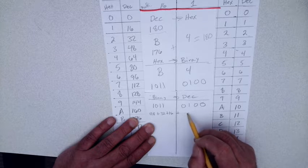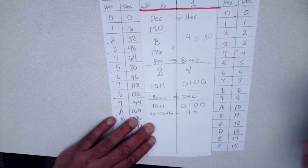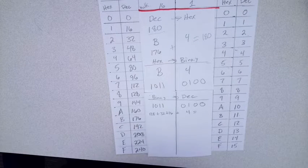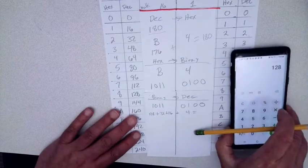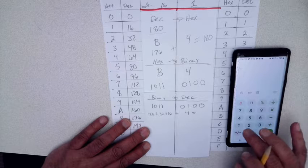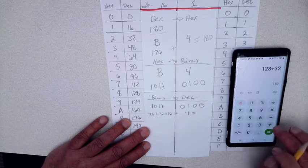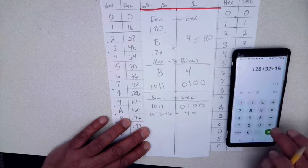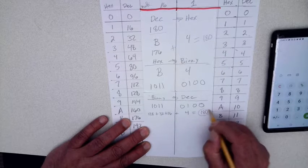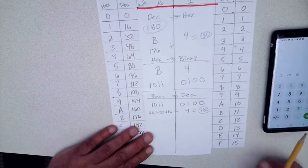On the lower nibble side, this is an eight and this is a four — we don't have a two or a one. Using our calculator: 128 plus 32 plus 16 plus 4 gives us 180. Same value as our original decimal, same as our hex, same as our binary — they all match up.